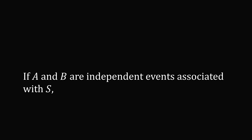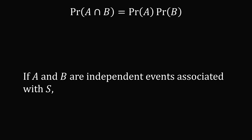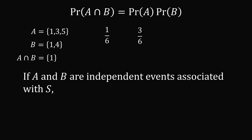If A and B are independent events associated with S — the definition of independent events is that two events are independent if and only if the probability of A and B equals the probability of A times the probability of B. For example, let A be {1, 3, 5} and B be {1, 4}. So A intersect B will just be {1}. The probability of A and B is 1 over 6. The probability of A is 3 over 6. The probability of B is 2 over 6. Multiplying 3 over 6 by 2 over 6 gives 1 over 6, so these two events A and B are independent. Note they don't have to be mutually exclusive to be independent.